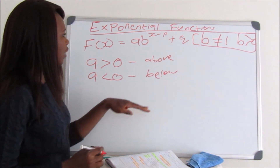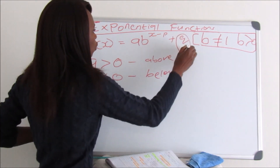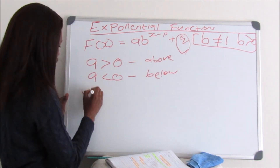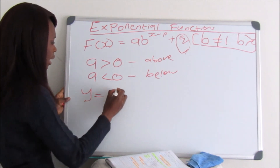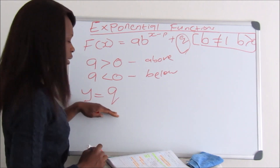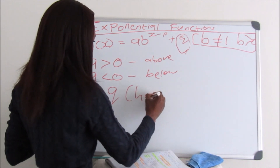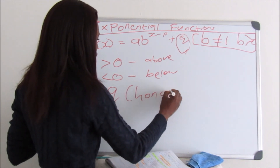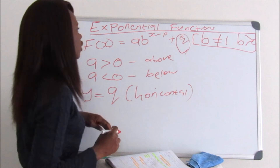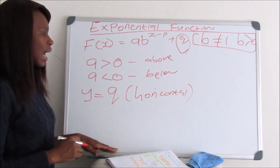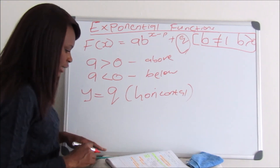Another thing you have to take into consideration is Q, which is the equation of the horizontal asymptote. So your horizontal asymptote is Y equals Q. With exponential functions, we do not have a vertical asymptote — we only have the horizontal asymptote.